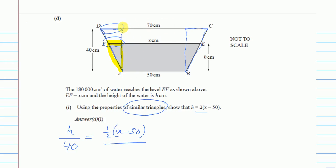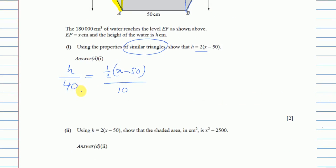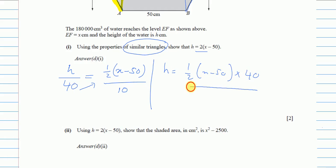For the larger triangle, the full width is 70. Subtracting the 50 base leaves two pieces of 10 each — so that side is 10. Now solving the ratio: h/40 = [(x − 50)/2] / 10, so h = ½(x − 50) × 40 ÷ 10, which gives h = 2x − 50.